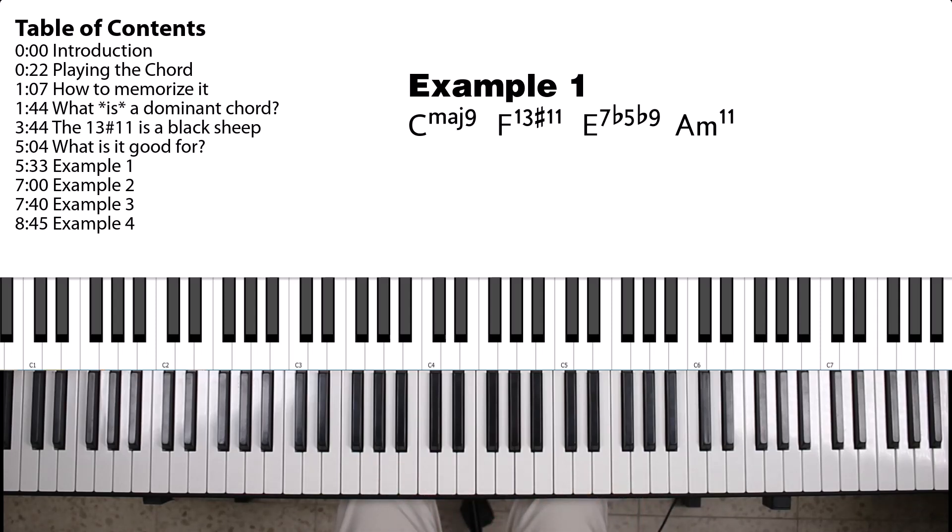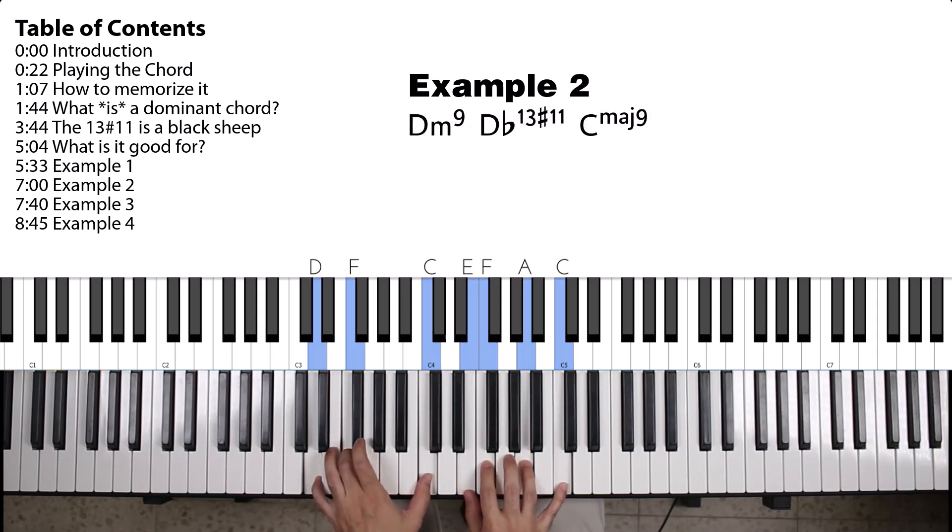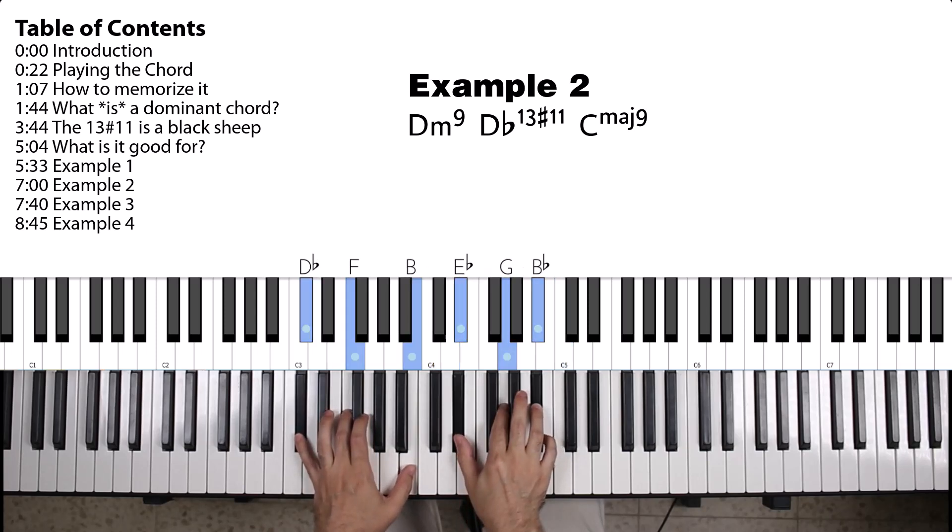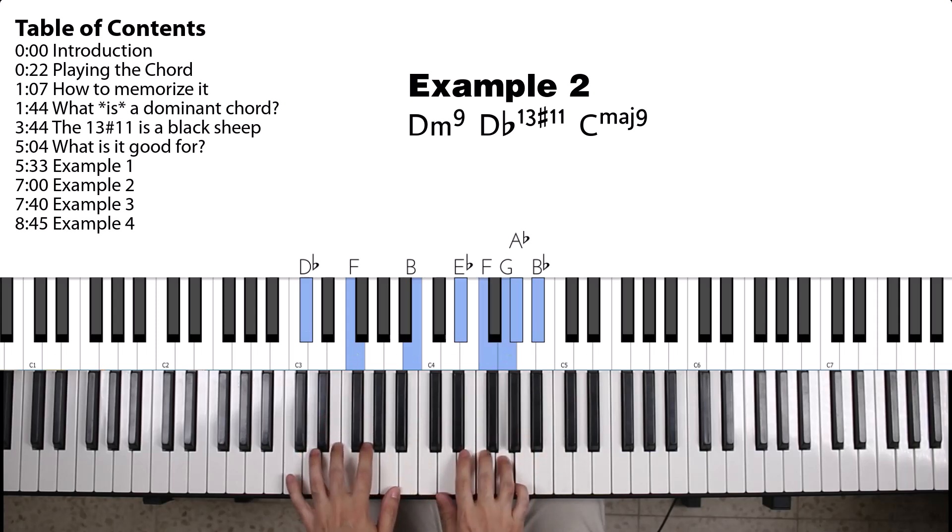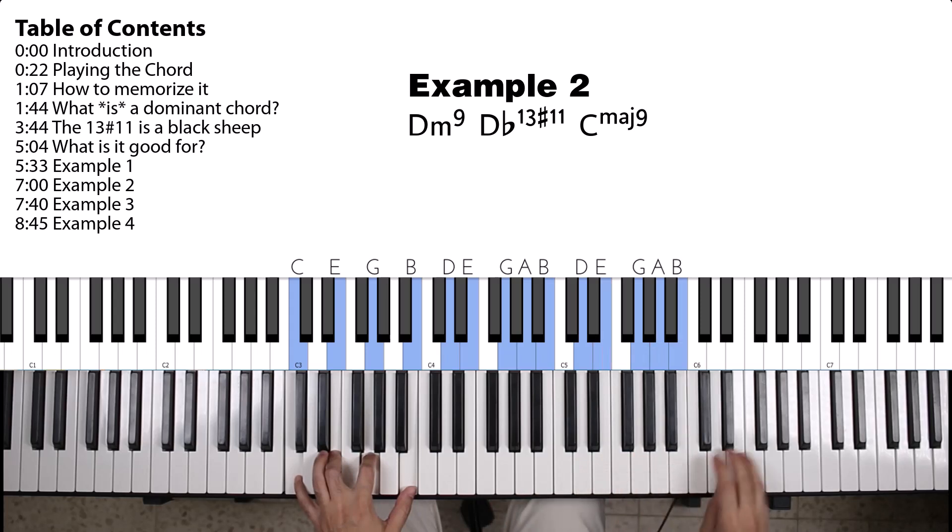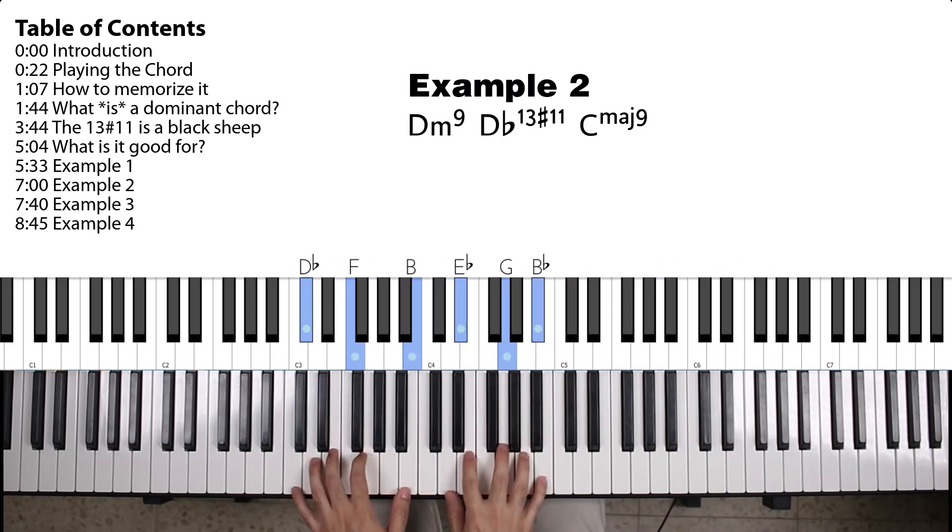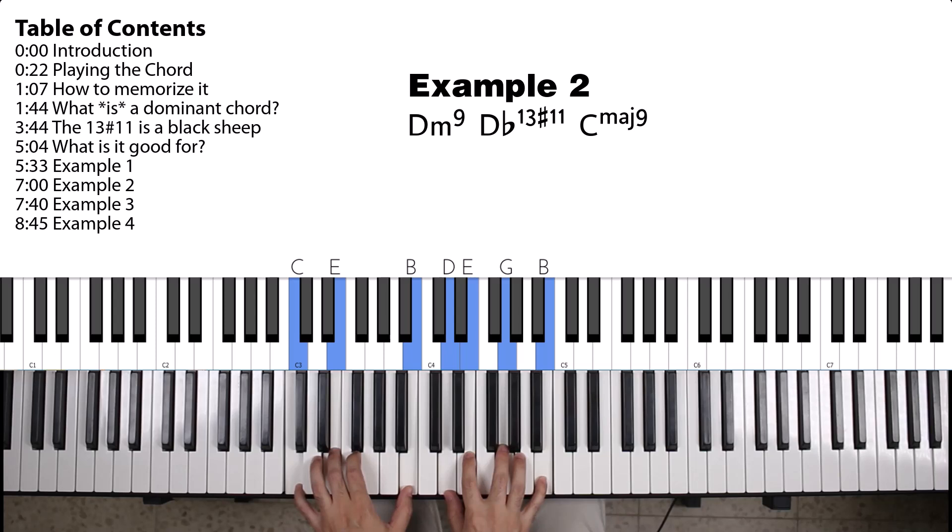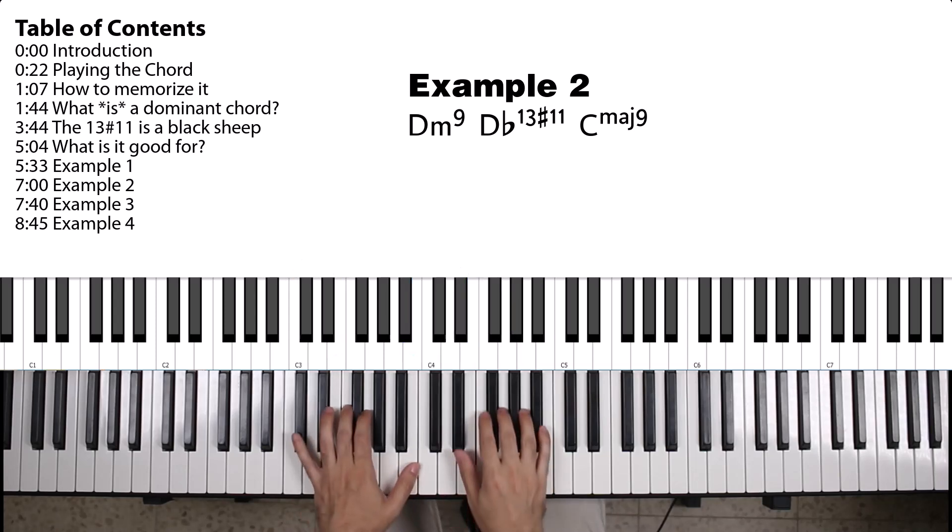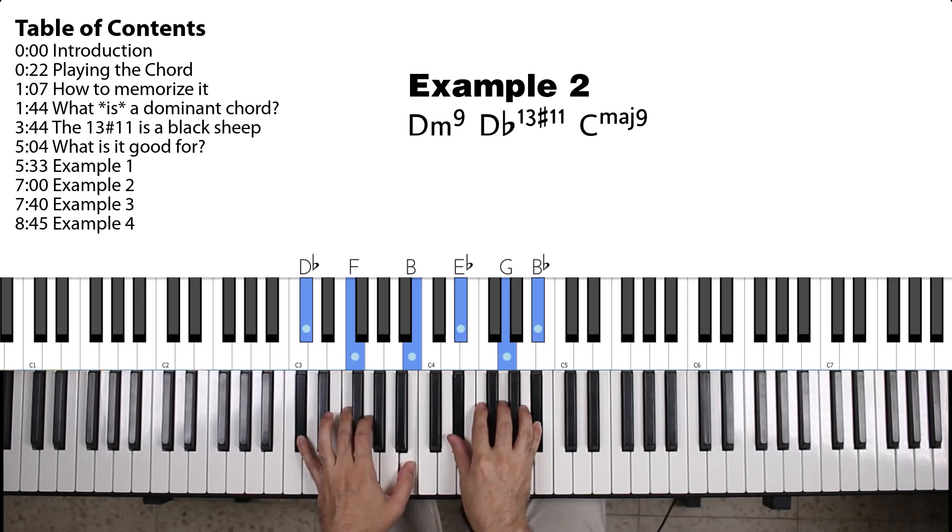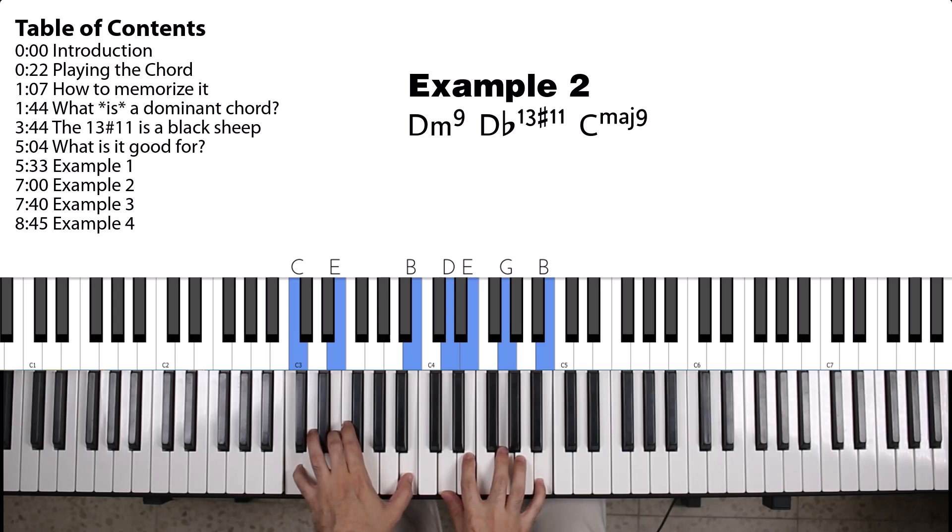Let's have another example. Let's have a D minor, or D minor 9, going to a D flat 13 sharp 11. So, something like this. So, this D flat 13 sharp 11 resolves chromatically quite nicely to the C major 9.